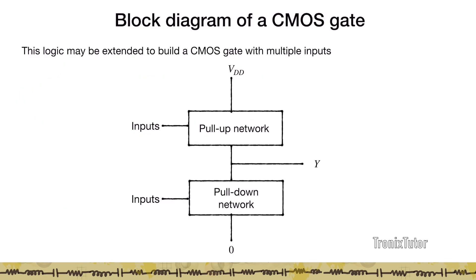We can extend this inverter logic to a generic gate by thinking of the gate as a pull-up network of PMOS transistors and a pull-down network of NMOS transistors. Both networks have inputs supplied to them. If the inputs short the pull-up network the output goes to one, and if the inputs short the pull-down network the output goes to zero. The two networks are designed so that they are always mutually exclusive — they never short together at the same time.